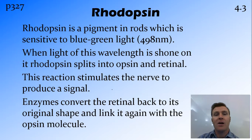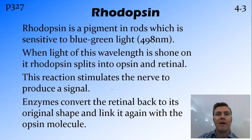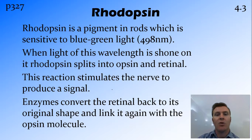Those enzymes resetting and recreating rhodopsin takes a bit of time. This is why if you're in a bright area and move into a dull area or turn off the lights, it takes a while for your eyes to adjust — because all your rhodopsin, due to the bright light, has been split into opsin and retinal.